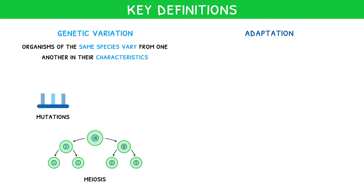Genetic variation is also caused by meiosis, creating new combinations of alleles in crossing over and random orientation, and sexual reproduction, combining alleles from two individuals.